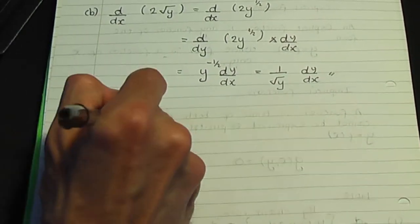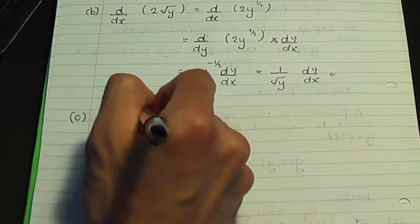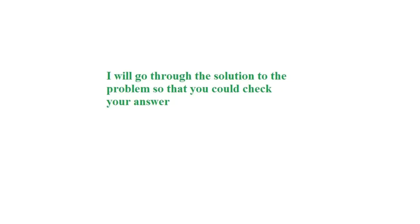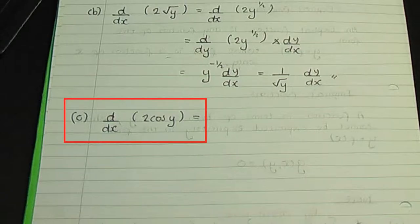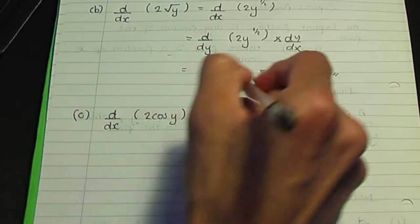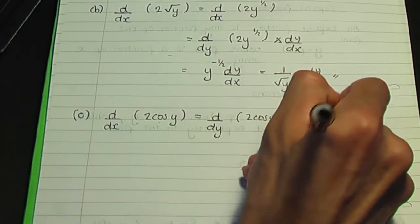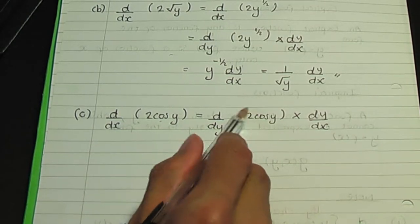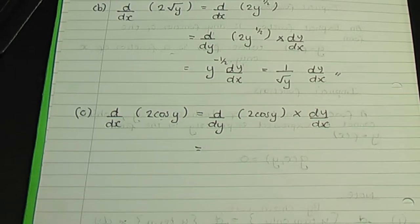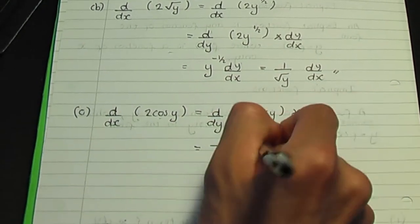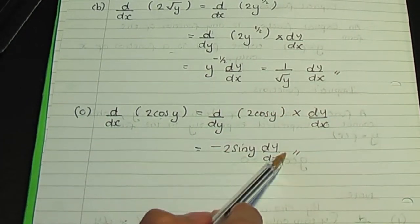Part c: d by dx of 2 cos y. Again, we have a y term only, so we use this chain rule result. We need d by dy of 2 cos y, then multiply by dy over dx. When I differentiate 2 cos y, the derivative of cos is minus sin, so it's minus 2 sin y times dy over dx.